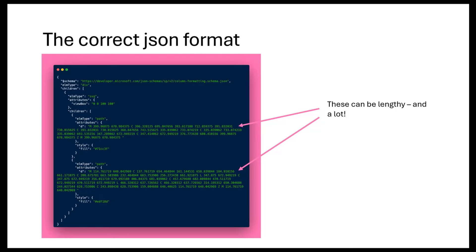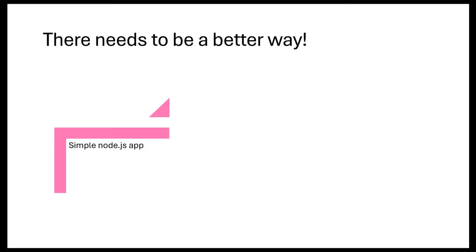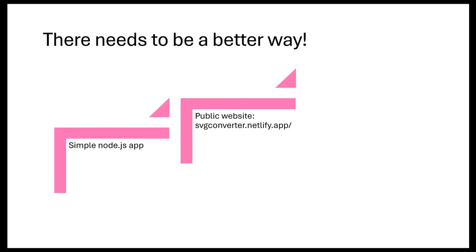SVGs can be really lengthy depending on how complex they are. I felt there needed to be a better way, and since I'm super lazy, I built a simple Node.js app using vanilla JavaScript — but it only worked on my machine. So I put it on a website where everyone could input SVG files and get the JSON code for their SharePoint list. Then I thought: this needs to be a web part.